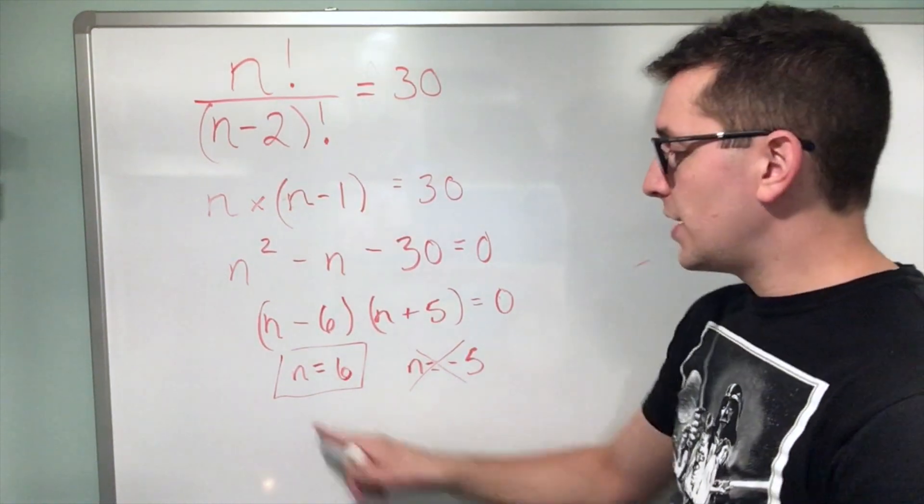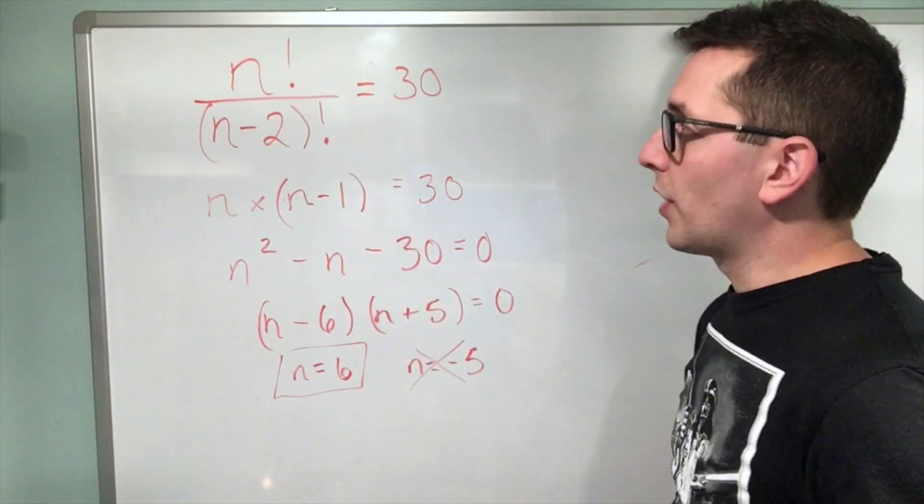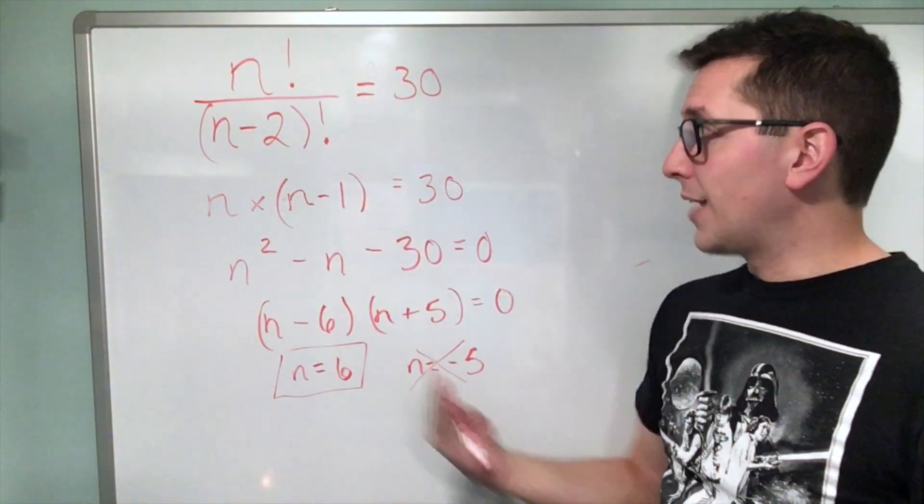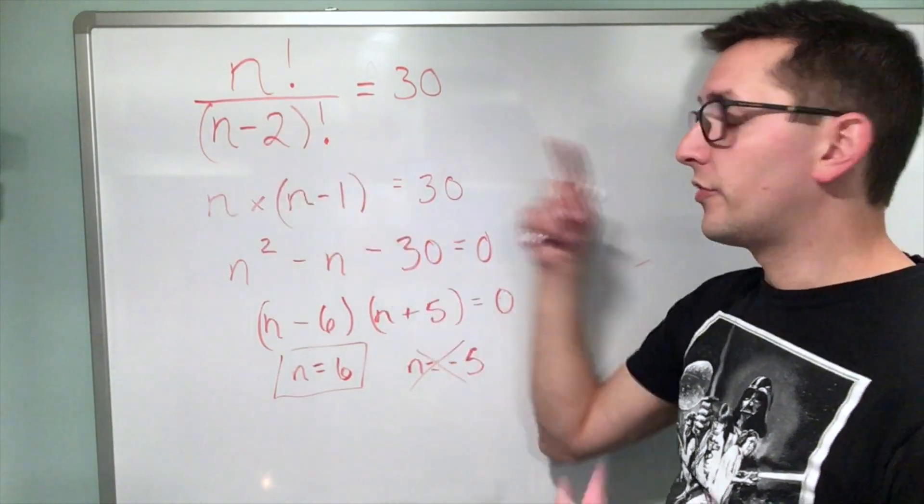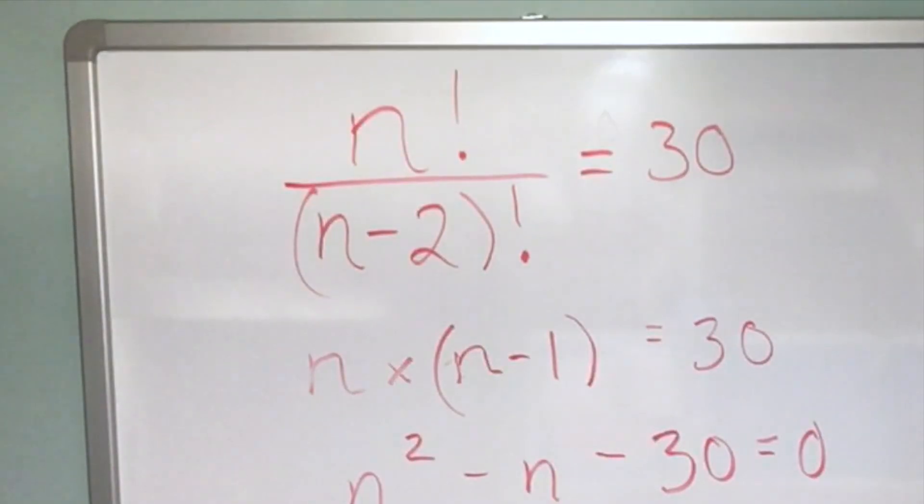Now you can check your answer by taking n equals six, sticking it in for n in the original problem, applying the factorial operation here and here, you'll see that you get 30. So we successfully solved this equation.